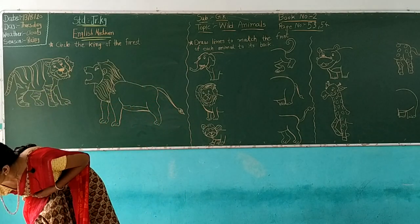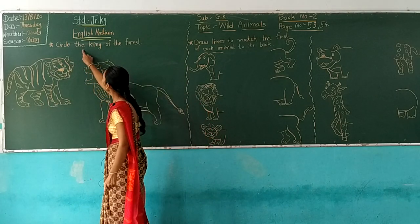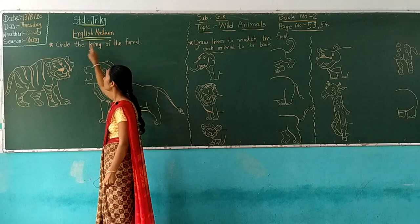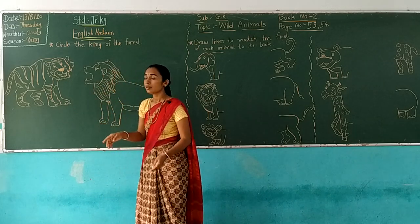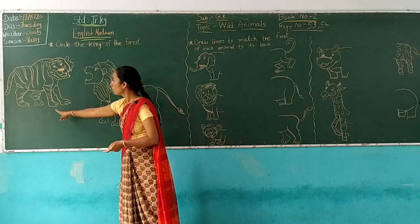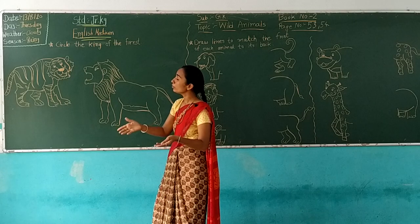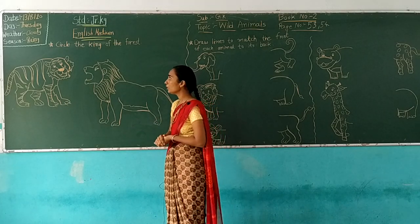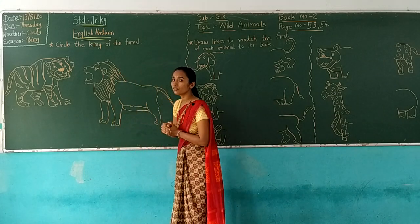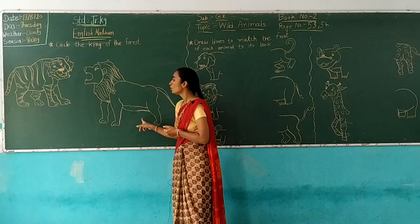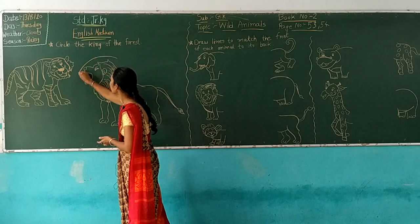So children, now look at this exercise — circle the king of the forest. Here I have drawn two animals: one is a tiger and the other is a lion. So who is king of the forest? Lion! So circle the lion.